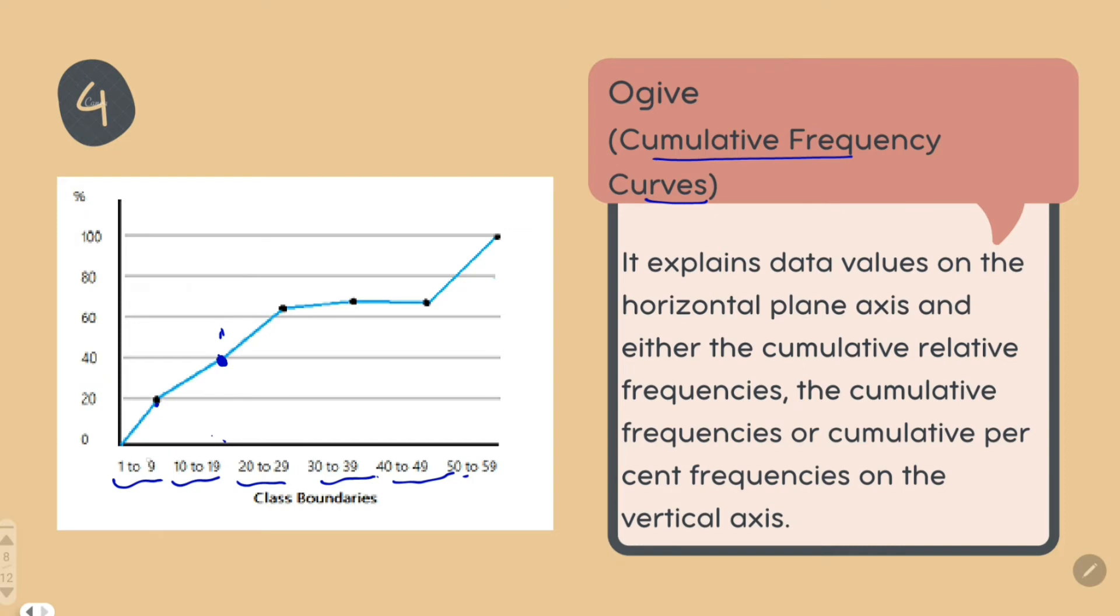Data values are explained on the horizontal axis and their cumulative, relative, or percent frequencies are marked on the vertical axis. Each data point tells us the value of the readings from 0 or the starting axis till that particular point. That is an ogive.